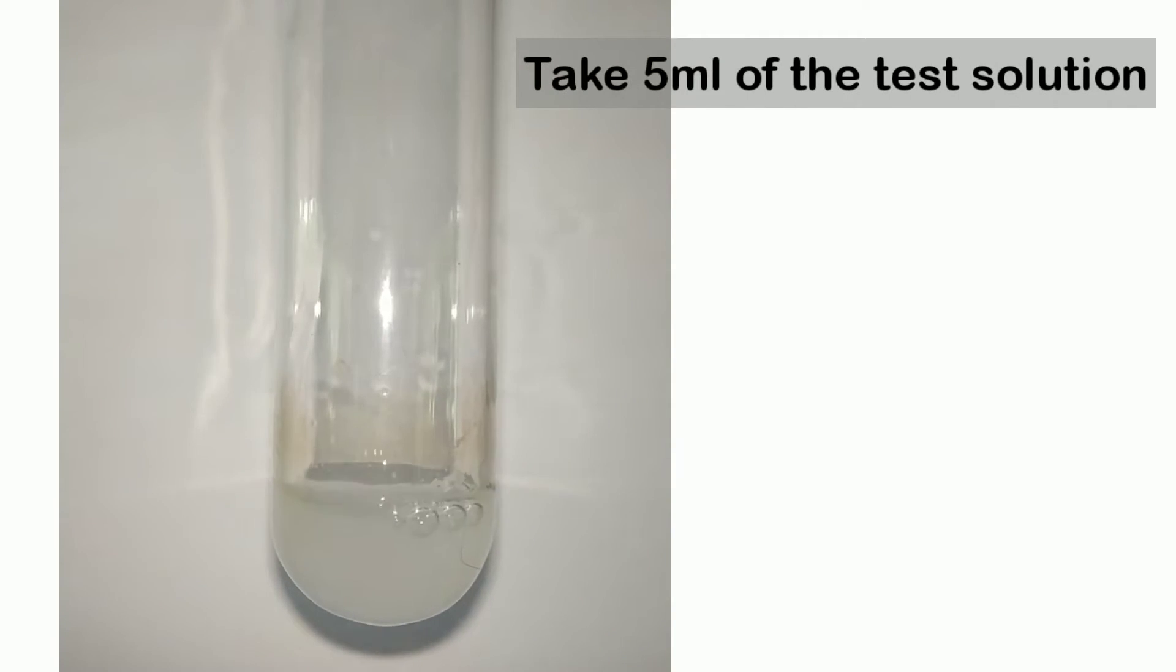Start by taking 5 ml of the sample solution. Here I have 1% glucose. You can use any reducing sugars like maltose or lactose.